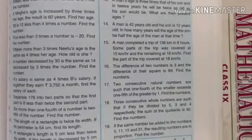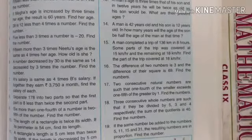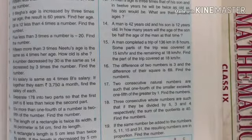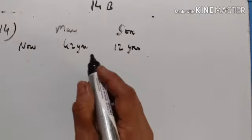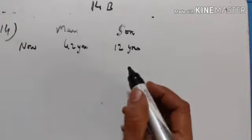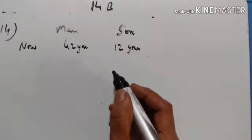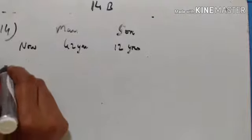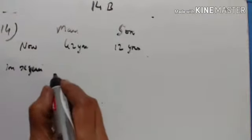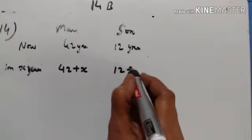14th problem: a man is 42 years old and his son is 12 years old. In how many years will the age of the son be half the age of the man at that time? The man is 42 years old and the son is 12 years old. Let the number of years be x. After x years, the father will be 42 plus x and the son will be 12 plus x.